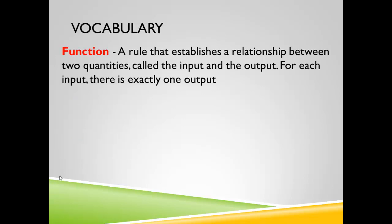Alright, vocabulary. Function is a rule that establishes a relationship between two quantities called the input and the output. For each input there is exactly one output, meaning your x, which is your input, can only equal one thing. It can't equal two things and you'll kind of see what I mean, but for the most part x is only ever going to equal one thing.